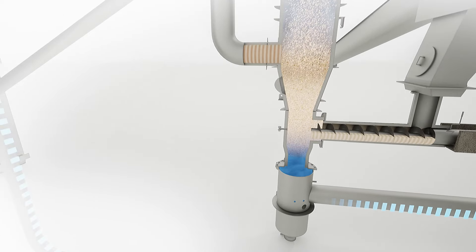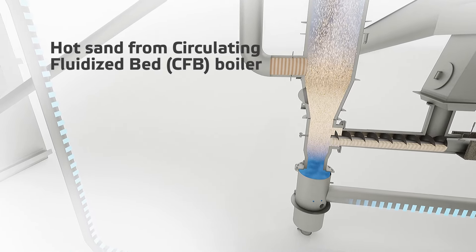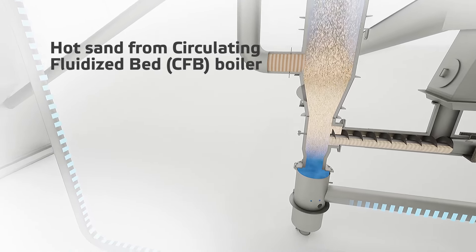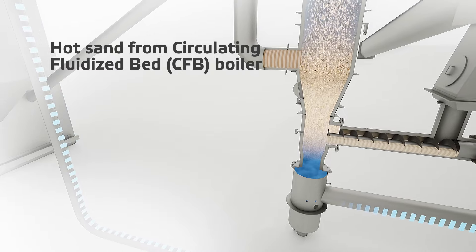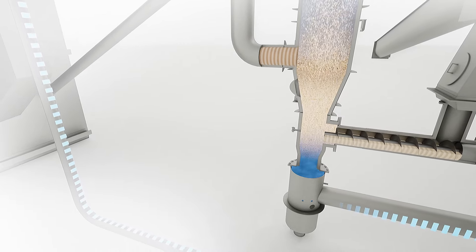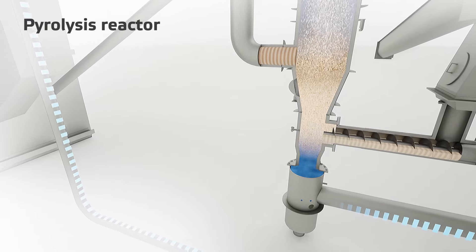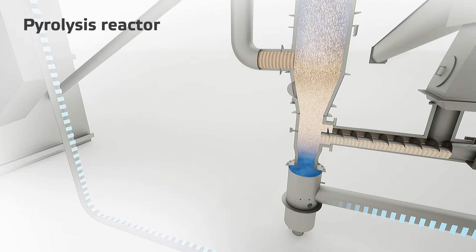Hot sand from the closely integrated Valmet circulating fluidized bed boiler is used as a heat source and is fed to the reactor. The pyrolysis process begins when feedstock is mixed with hot sand.